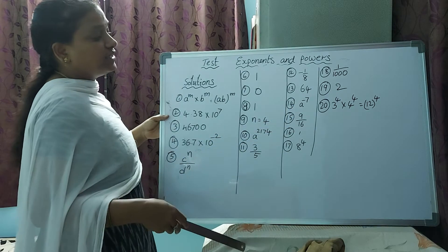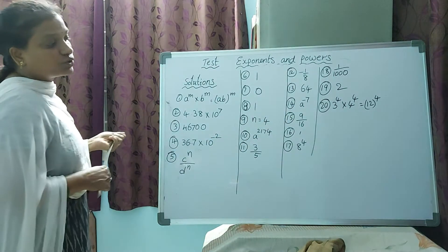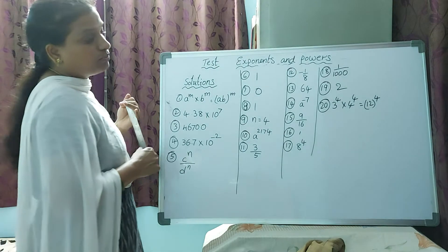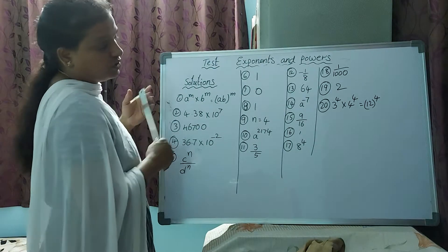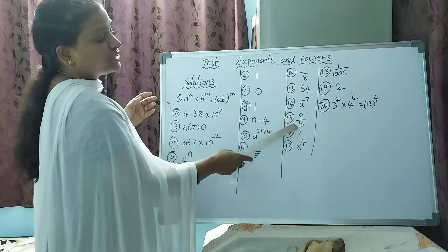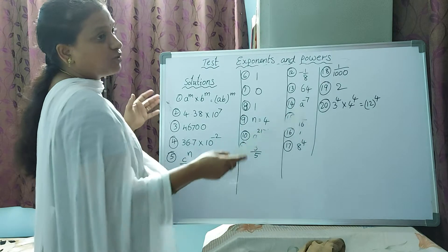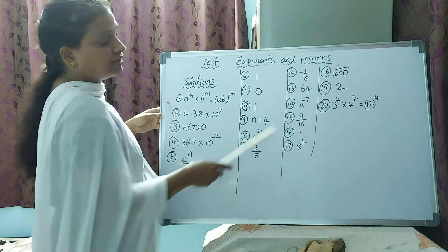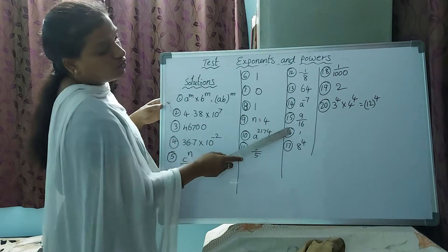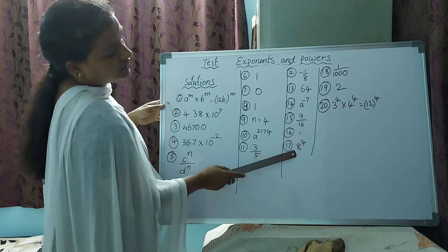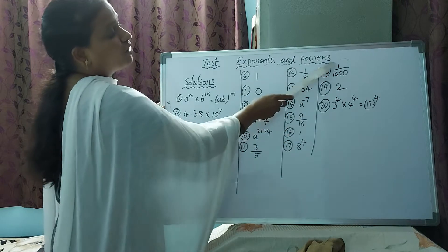Next one: a power minus 7. Then (4/3) whole power minus two — you have to reciprocal this one. Three squared is 9, four squared is 16.